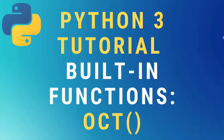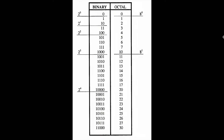Today we're going to talk about the Python 3 oct, or octal, built-in function. Let's start by looking at the octal table. This is the octal numeral system — it uses digits 0 through 7, and it's called the base-8 number system.